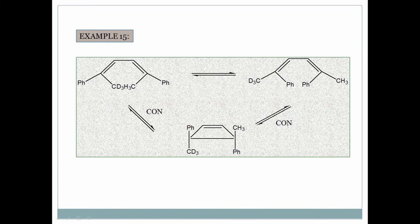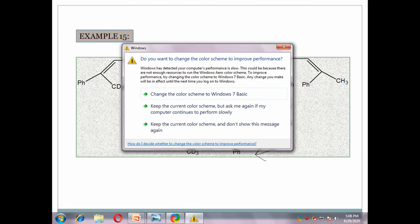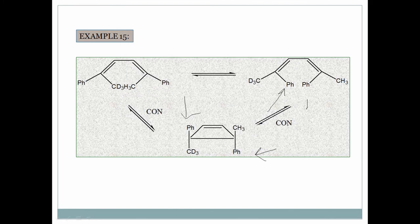These problems have appeared in CSIR exam. The problem asks how to convert one compound to another product. The answer is: first do con electrocyclization, then con electrocyclization again. Here two phenyl groups are opposite — con ring closure gives both phenyls opposite. Then ring opening with con mode also gives both phenyls opposite. This is a simple way to convert one product to another.